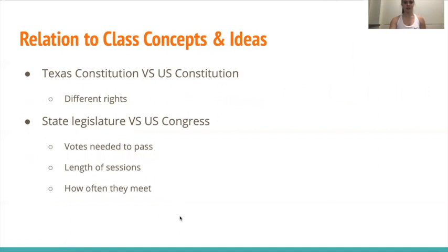In relation to class concepts, the Texas Constitution versus the U.S. Constitution: states hold different rights compared to the federal government due to what is written in the U.S. Constitution, and therefore state constitutions can go into more detail about those different rights — and it is up to each state what they do with those. Regarding state legislators versus the U.S. Congress, the votes needed to pass, the length of sessions, and how often they meet during the year all play a big role in what gets passed and what gets discussed — and in turn, who gets voted in again, who gets what accomplished, and what happens in the session after that.